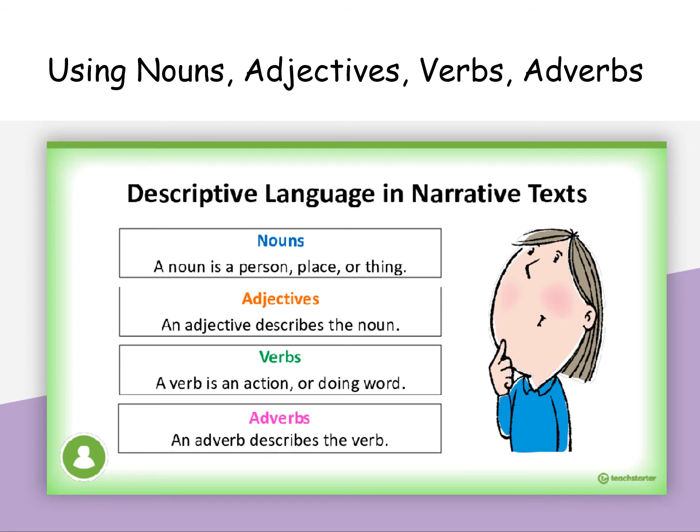Descriptive language in narrative texts uses nouns, adjectives, verbs, and adverbs. A noun is a person, place, or thing. An adjective describes the noun. A verb is an action or doing word. And an adverb describes the verb.